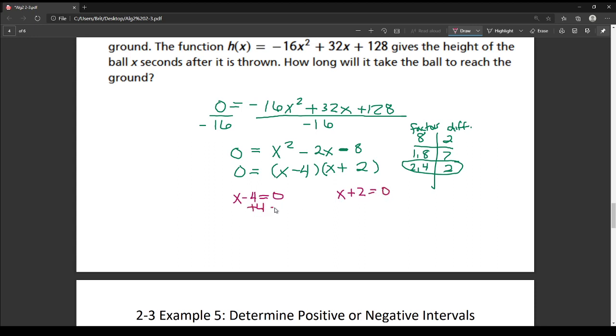So here if I add the 4 over, I get x equals 4. Here I need to subtract the 2 over and I get x equals negative 2. Now again, because this is talking about time and we can't have negative time, we're going to get rid of that answer.